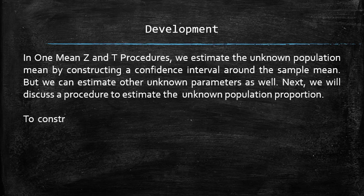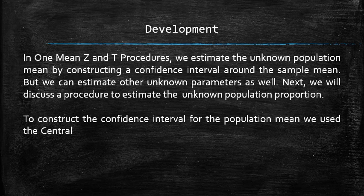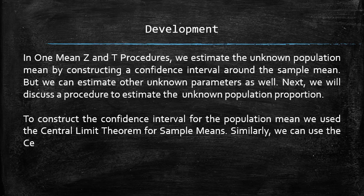To construct the confidence interval for the population mean, we use the central limit theorem for sample means. Similarly, we can use the central limit theorem for sample proportions to construct a confidence interval for population proportion.